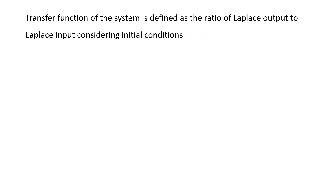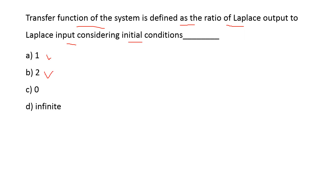Next: the transfer function of a system is defined as the ratio of Laplace transform of output to the Laplace transform of input, considering initial conditions are — options are: one, two, zero, infinite. The transfer function is defined with initial conditions equal to zero. So option C is the right answer.